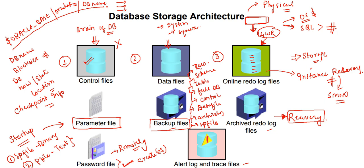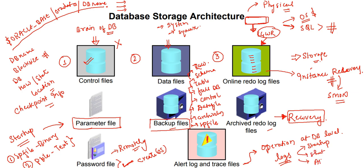Additionally, we have alert log files and trace files. Whenever you perform any operation at the DB level, everything gets captured in alert logs or trace files. These are log-capturing files: starting your database, shutting it down, altering the database, starting MRP processes — any activity and any errors (like ORA errors) will appear in alert logs and trace files. I will cover the locations and how to view and analyze them, but for now understand that these are log files where all DB-level operations are recorded.